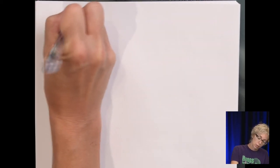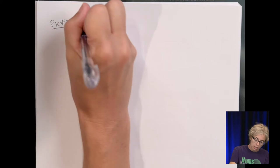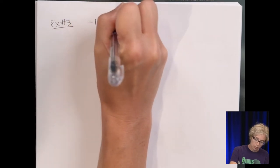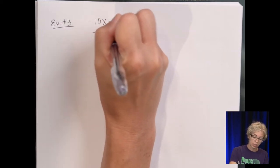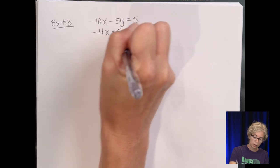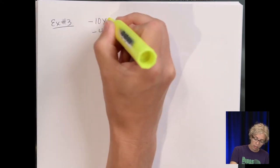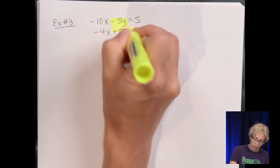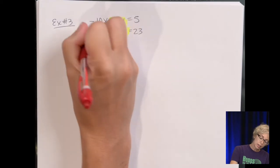That is the substitution method. Let's now look at the elimination method. Example 3: these are not in the format of x equals or y equals. The equations are negative 10x minus 5y equals 5, and negative 4x plus 5y equals 23. The y terms have the same number in front with opposite signs, so when I add them I get 0. I'm going to add these two equations.